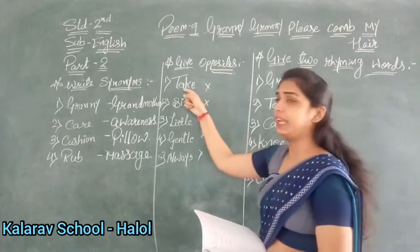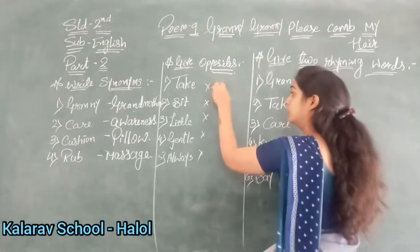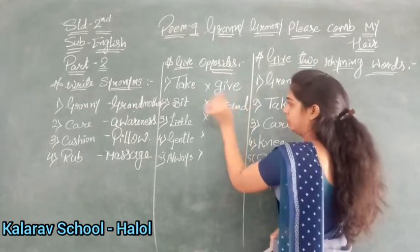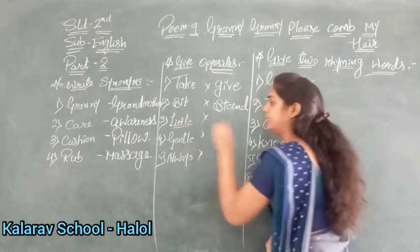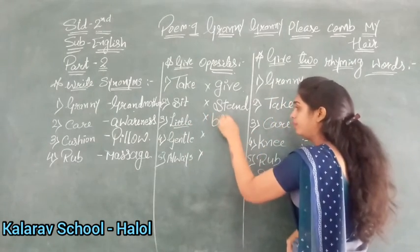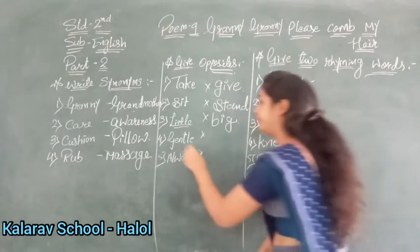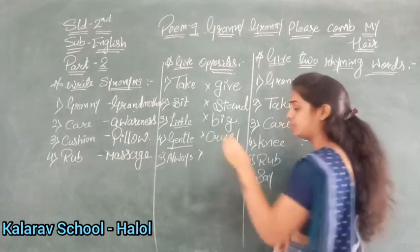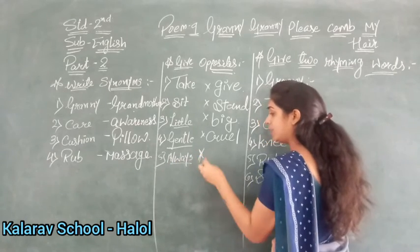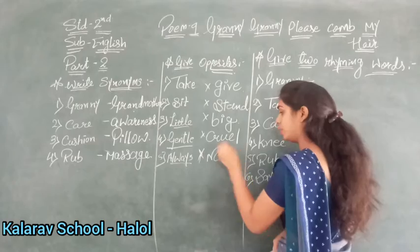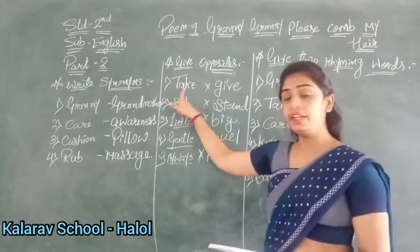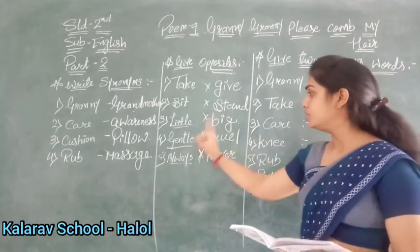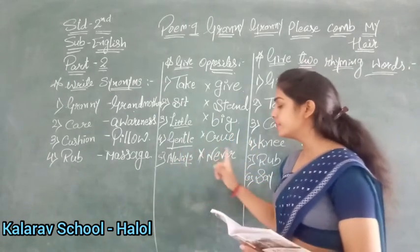First: take — take means to take something. So the opposite of take is give. Sit — the opposite is stand. Next is little — the opposite of little is big. Next is gentle — the opposite of gentle is cruel. And the last one is always — always means 'always/every time', and the opposite is never. N-E-V-E-R. Now read from the first: take — give, sit — stand, little — big, gentle — cruel, always — never.